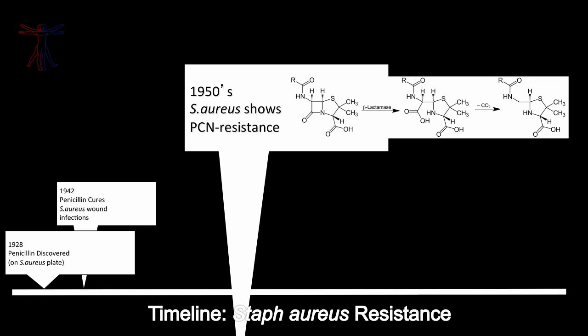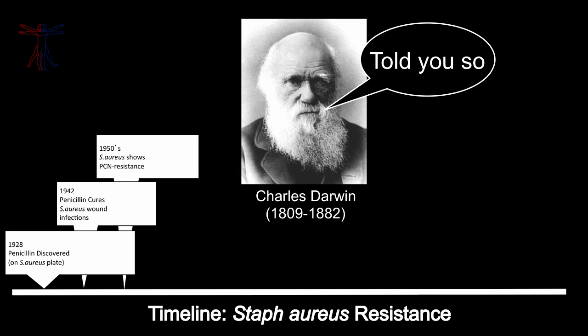Once that beta-lactam ring in penicillin is broken, it's no longer effective as a clinical drug. Can you hear that scratching sound? That's the sound of Charles Darwin dancing a macarena of rage inside his tomb in Westminster Abbey. What did you think was going to happen if you put a selective pressure on a population that has a very short generational time? You will select out resistant strains. Evolution never sleeps.